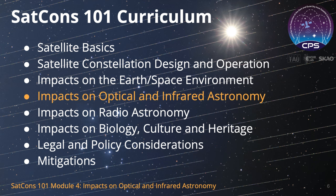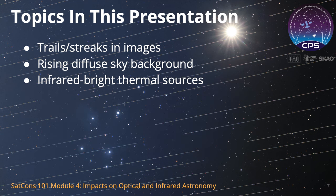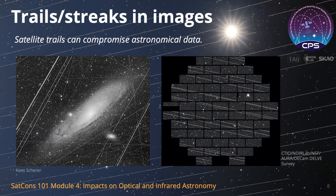Today we will focus on the topic of impacts on optical and infrared astronomy. I will discuss each of the following elements that relate to the topic of this video. Satellites can affect astronomy in various ways. A small number of dim satellites is expected to yield little interference and may not affect our ability to conduct scientific research in significant ways. Under certain circumstances, their presence can impact astronomical observations to the point where the data are compromised.